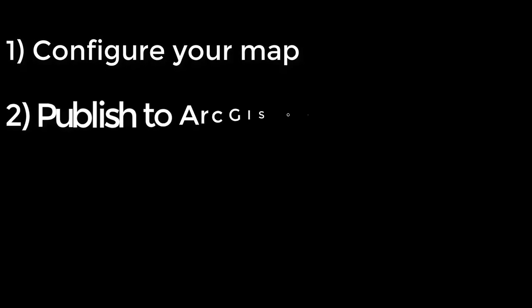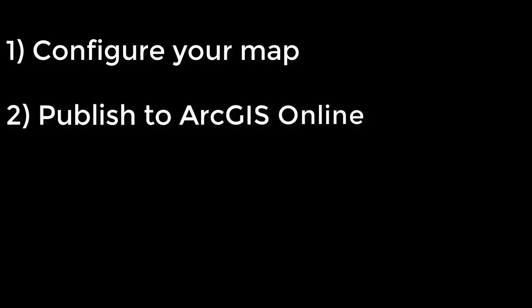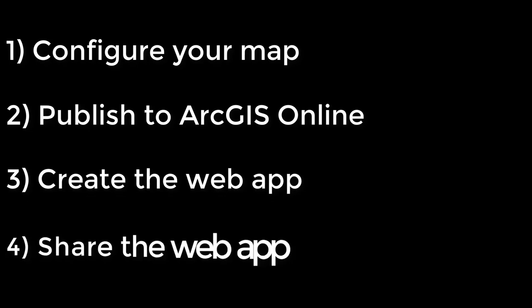There are four steps to creating a web app. First, you're going to configure your map using ArcGIS Pro. You're then going to publish the map to ArcGIS Online. You're going to create the web app, and then finally you're going to share your web app.